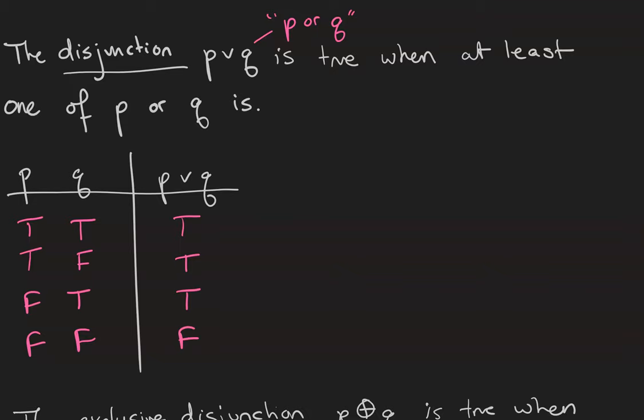This time, our example is the statement P or Q, which is that 2 plus 2 equals 4, or the earth is flat. This statement is true because it's good enough just for the 2 plus 2 equals 4 part.